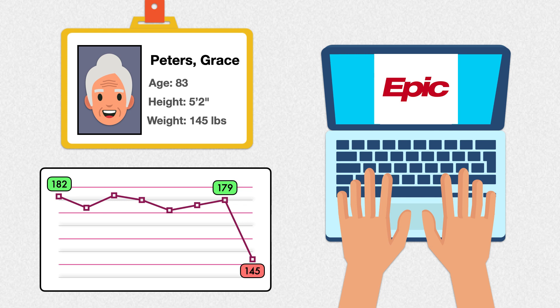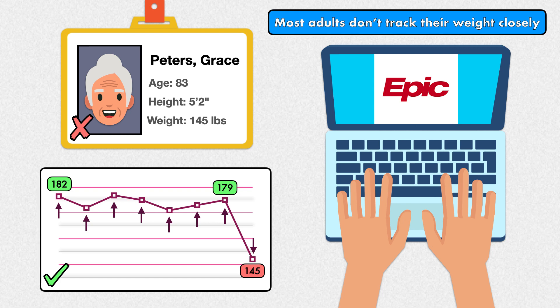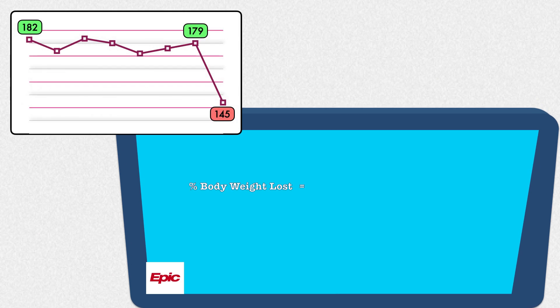You'll want to get her perspective on her recent changes in body weight, but you can also calculate the percent body weight lost using the objective data you already have. When there are multiple data points available and there's no reason to suspect weight changes due to fluid shifts, the information in the medical chart tends to be more reliable than subjective data the patient can provide, since most adults don't track their weight closely and can either drastically overestimate or underestimate how much weight they have lost or gained. To obtain the percent body weight lost, you set up a simple equation: percent weight loss equals the previous body weight minus the current body weight, divided by the previous body weight, times 100.